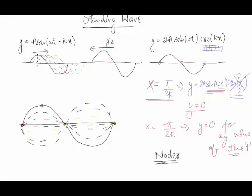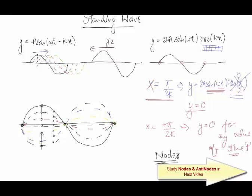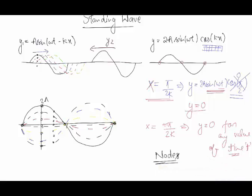This point actually moved from up to down. While the node point didn't move at all, and some points moved but not to maximum amplitude — only to a certain extent. So in standing waves, different points can have different amplitudes. The points that move with maximum amplitude — which is 2A — are called anti-nodes. While the points that do not move at all are called nodes.